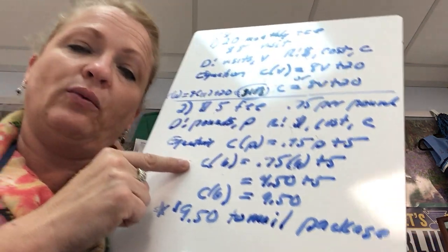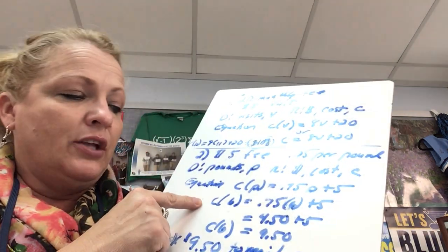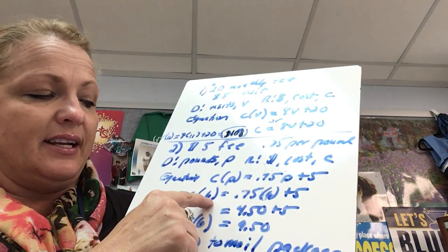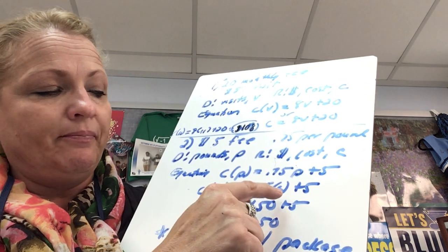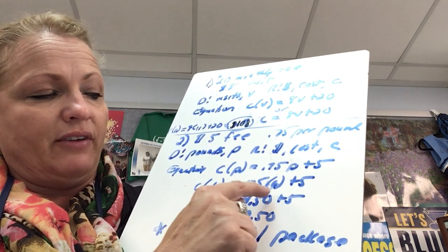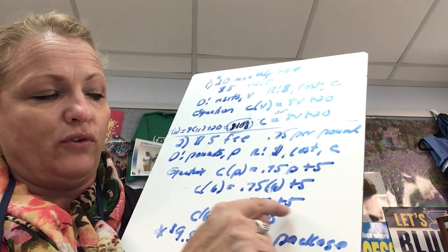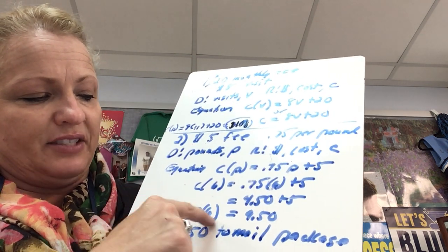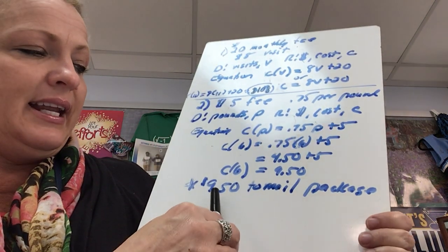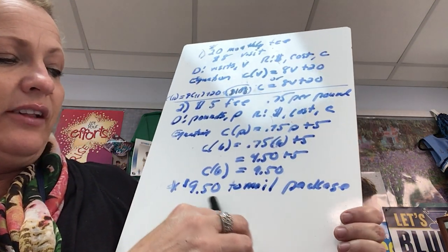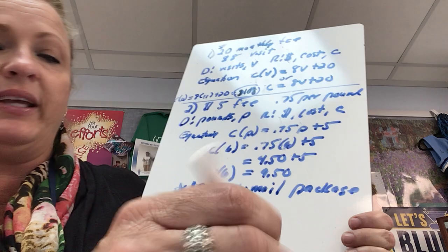Now the question is what will something cost that weighs six pounds to mail? So I'm asking what is C of six, or isn't that just a fancy way to say I put in six for X, or in this case for P? So 75 cents times six is 450, 450 plus five is 950, so C of six equals 950, or another way to say that is it will be $9.50 to mail the package that weighs six pounds.